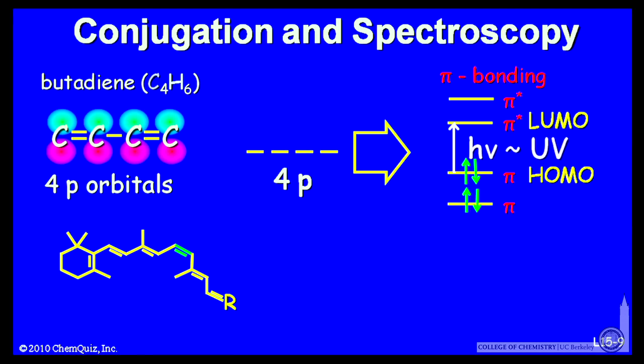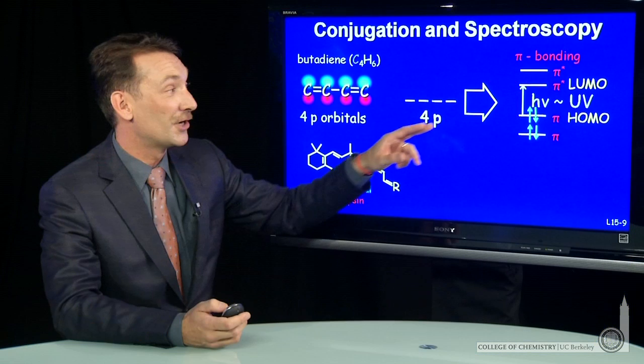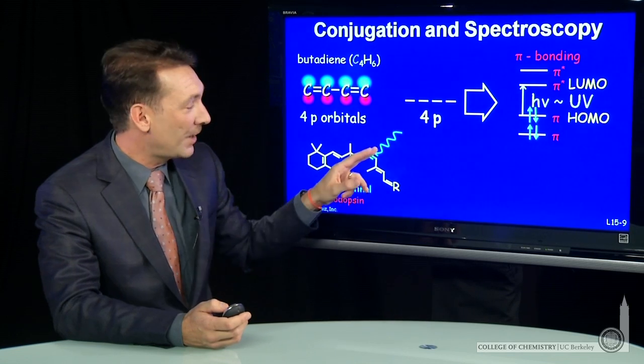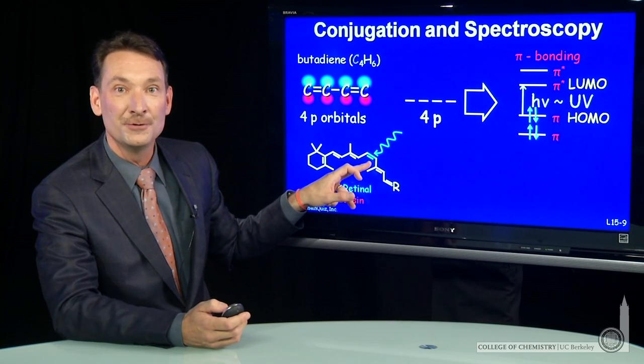Another example is the compound cisretinal, or rhodopsin. Now, this is a light receptor in your eye. And when this absorbs a photon, that bond is weakened. I go from a pi to pi star, so the bond order here is reduced.